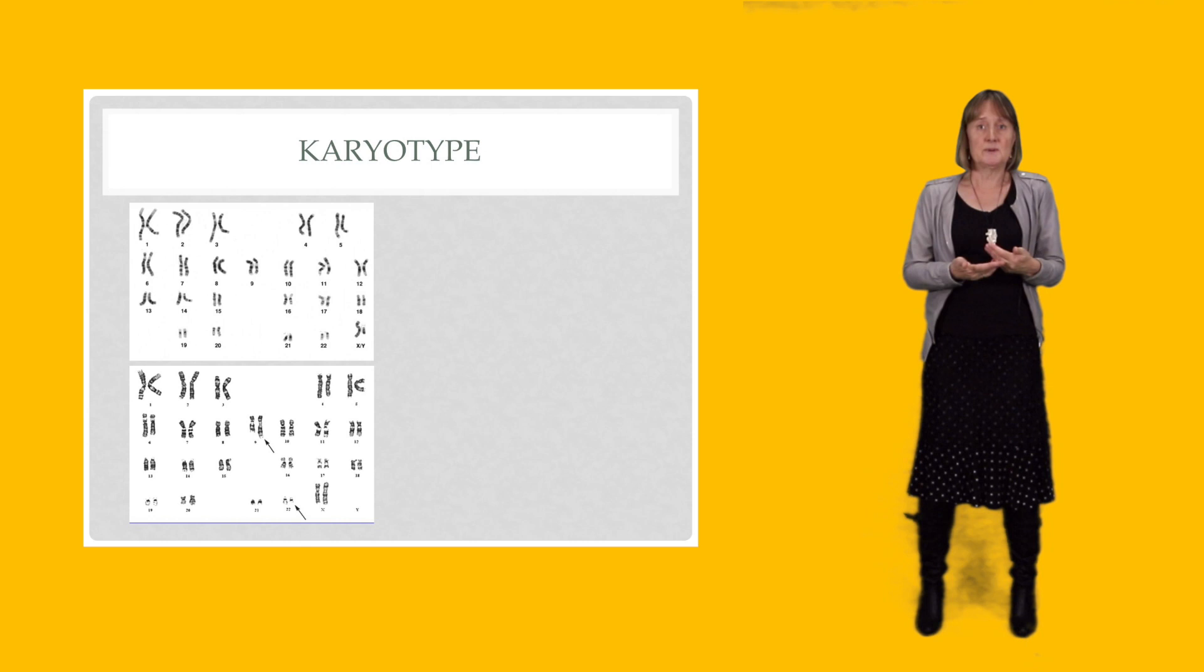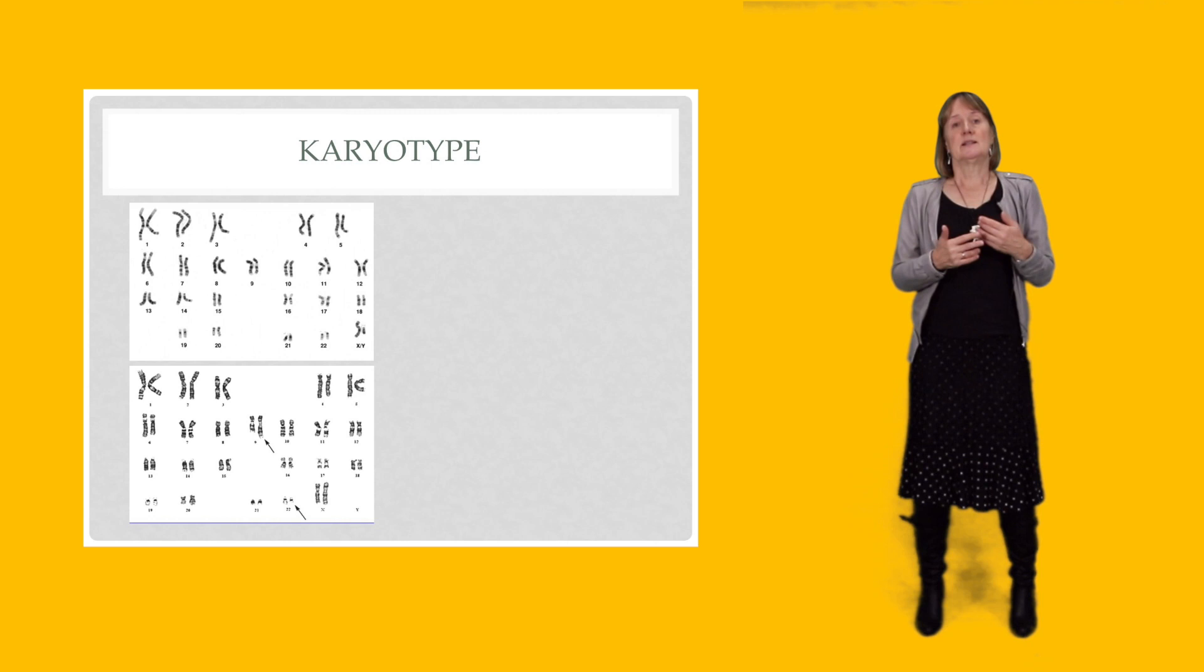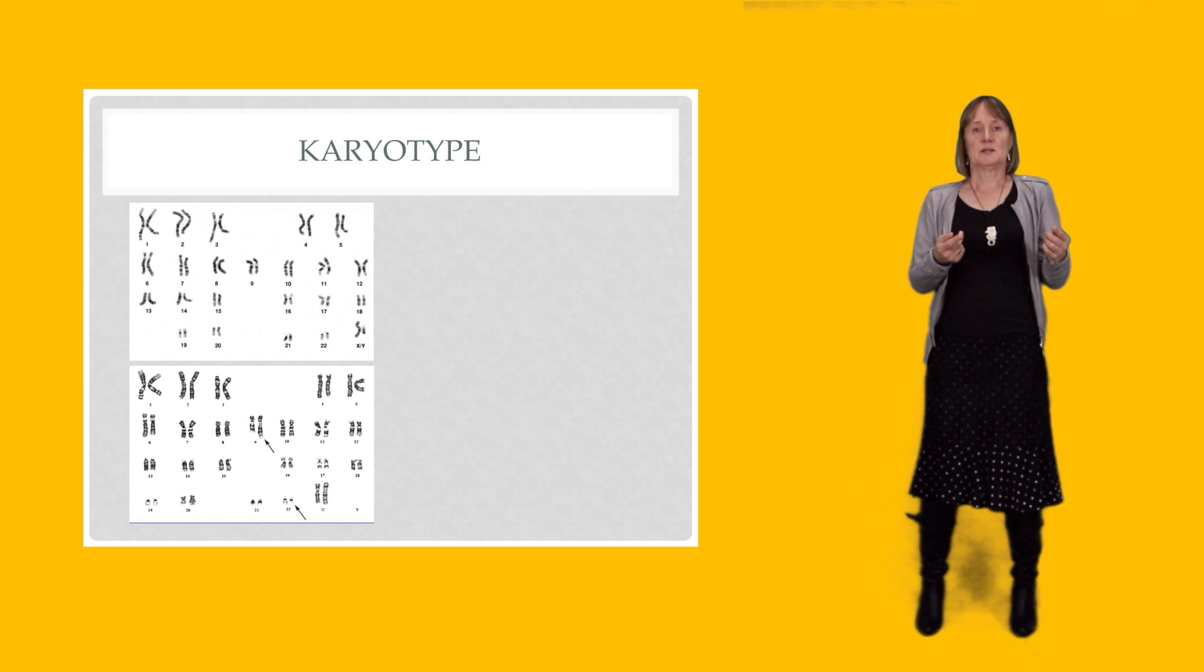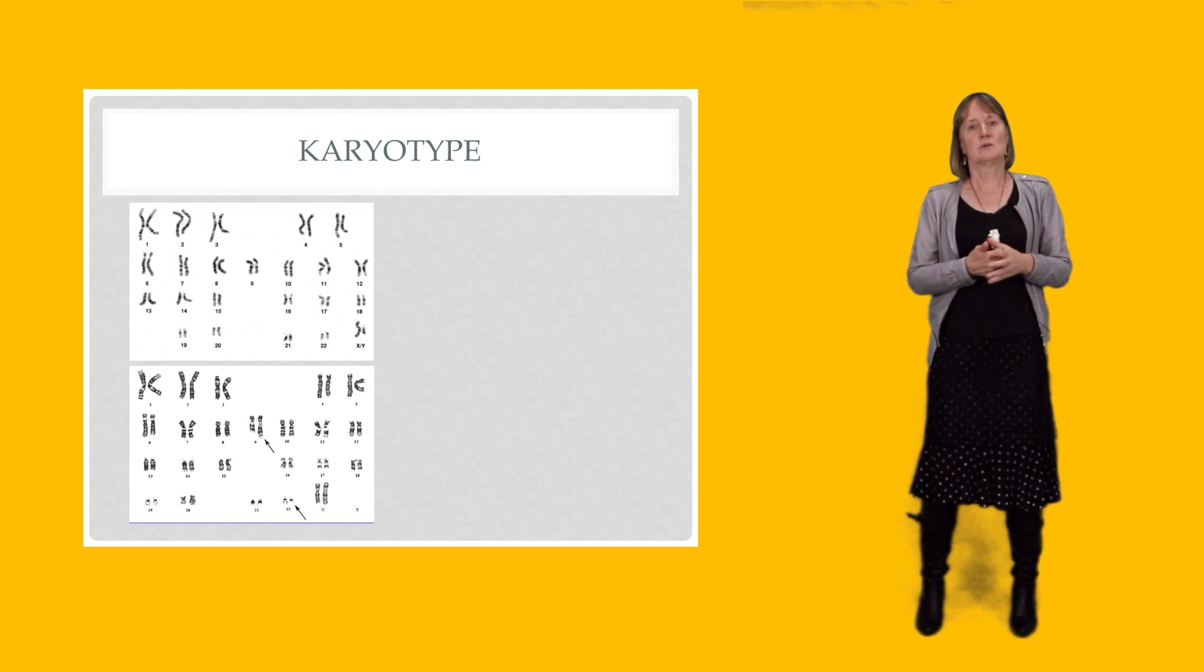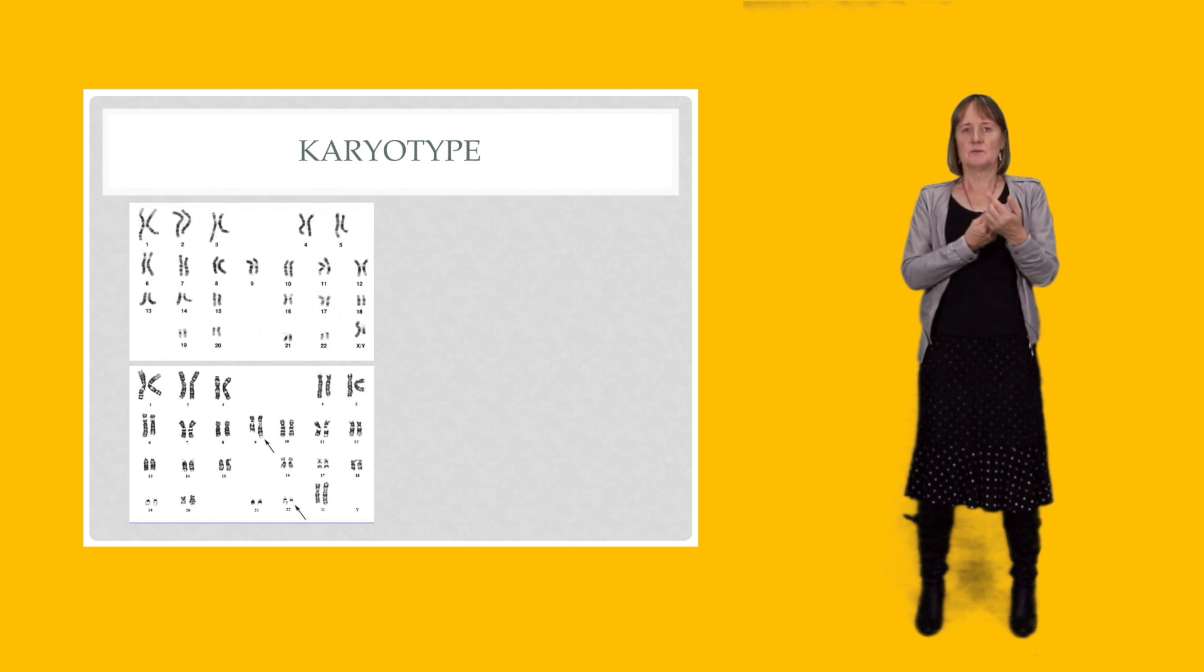Underneath is an example of an abnormal karyotype, and it's one of the classic ones. It's what we see in chronic myeloid leukemia. It's what we refer to as a 9;22 translocation. So there's been a swap of genetic material between one chromosome 9 and one chromosome 22. So if you look at the picture, there's one rather long chromosome 9 and one rather short chromosome 22. And it just so happens that the way those bits of chromosome get switched, it creates an oncogene that then causes the disease.